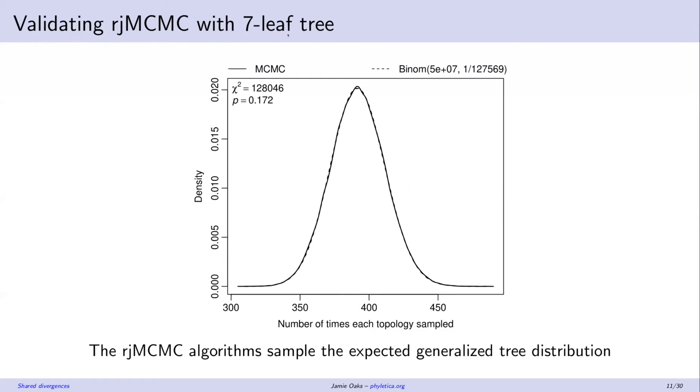So I'll do that with a test that we did with a seven-leaf tree. And with seven leaves, there are about 128,000 topologies in that generalized space. If our samplers are working correctly, we should sample all of these trees with equal frequency. And so if we look at the counts of how many times we sample the trees, that should be approximately binomial, just binomially distributed.